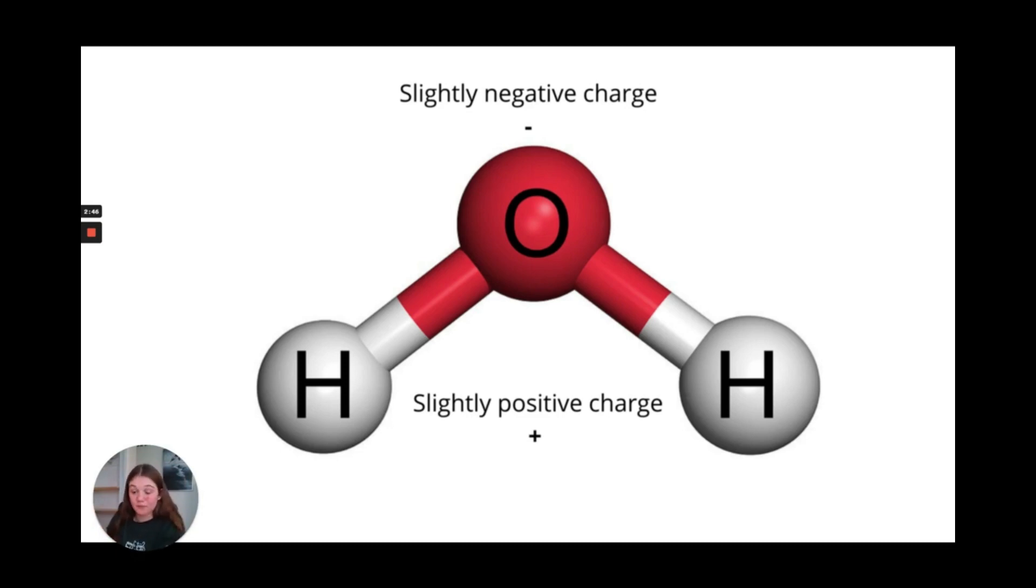In this case, we have water. Oxygen is quite electronegative, meaning it really wants its electrons. So, the electrons are attracted to the oxygen, and since it's bent like that, they're not distributed evenly, creating a negative charge.